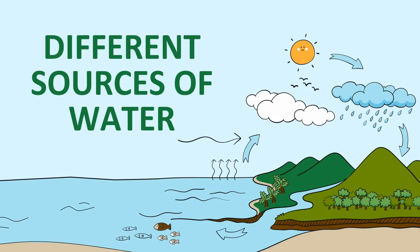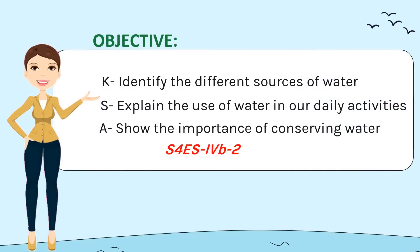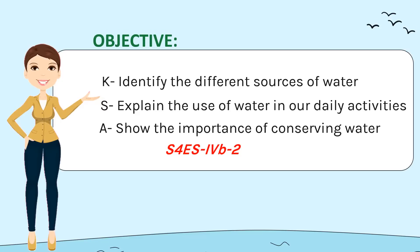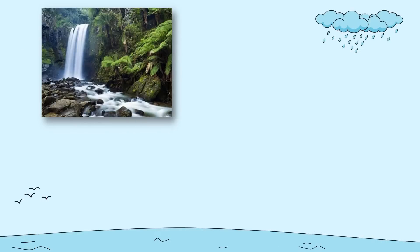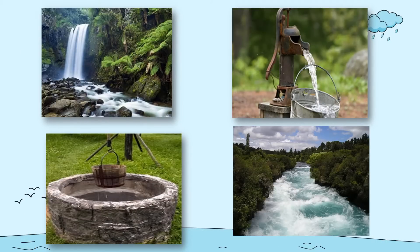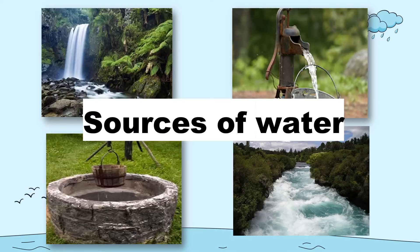Hello, Grade 4 learners! Welcome to science class. Today we will study the different sources of water — Grade 4, Quarter 4. At the end of this lesson, you are expected to identify the different sources of water, explain the use of water in our daily activities, and show the importance of conserving water. What can you say about the pictures? Where does the water come from? Those that you see in the picture are all examples of sources of water.